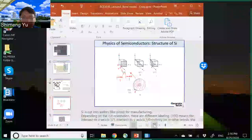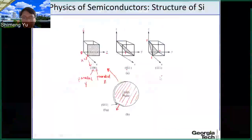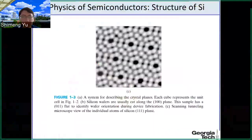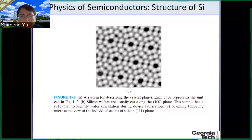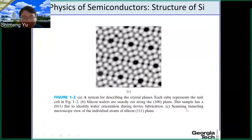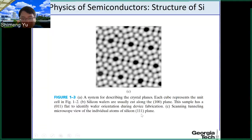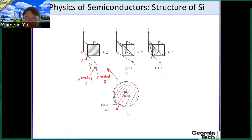This image is a high-resolution image taken under a scanning tunneling microscope. This shows individual atoms from the silicon (1,1,1) plane. So this is the (1,1,1) plane, and if you look into it under this microscope, you will see the individual atoms like this.